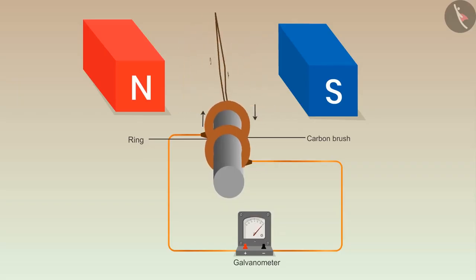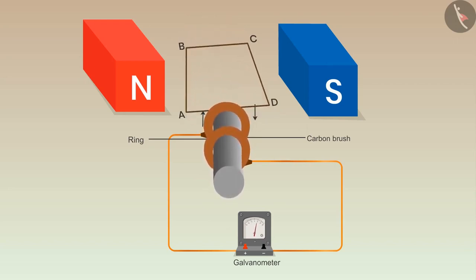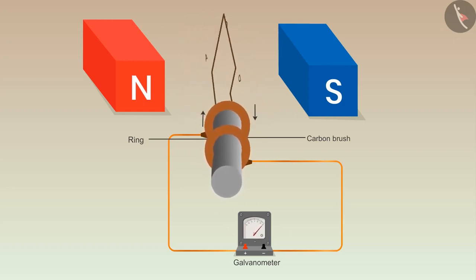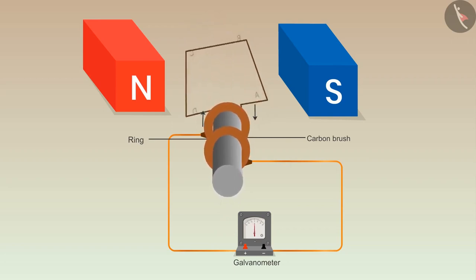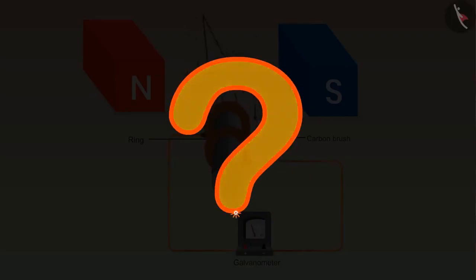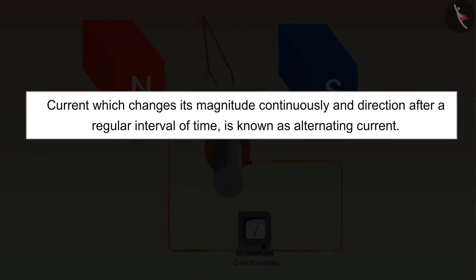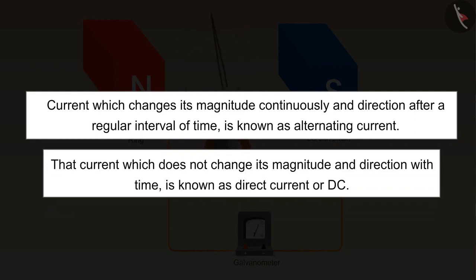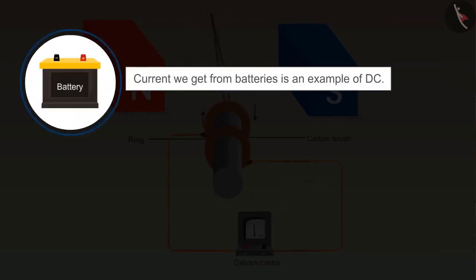A galvanometer shows the flow of current in the external circuit. After half a cycle, CD will rotate in the upward direction and AB in the downward direction, causing the direction of induced current to change. This change in the direction of induced current takes place after every half cycle — these types of generators are known as AC generators. The current which changes its magnitude continuously and direction after a regular interval of time is known as alternating current (AC), and the current which does not change its magnitude and direction with time is known as direct current (DC). The current from batteries is an example of DC.